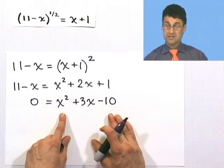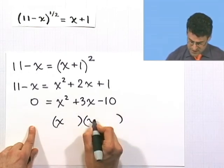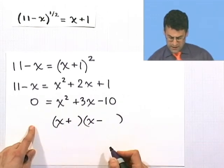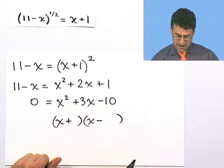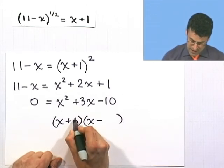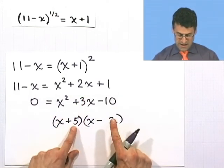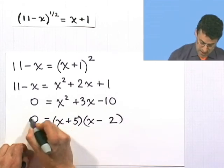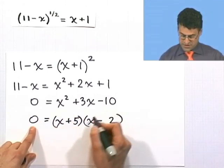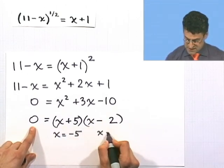Can this quadratic be factored? The negative sign means the factors will have opposite signs. What multiplies to give 10 but subtracts to give 3? That's going to be a 5 and a 2: (x plus 5)(x minus 2). Check: 5x minus 2x is 3x, and 5 times negative 2 is negative 10. So either x plus 5 equals 0, giving x equals negative 5, or x minus 2 equals 0, giving x equals 2.